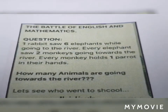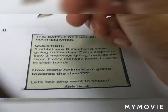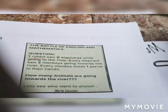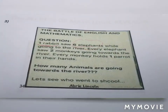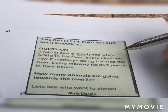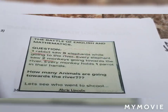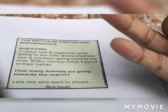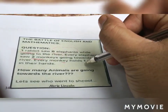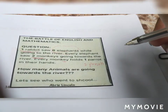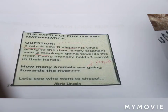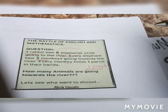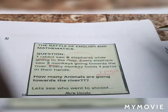As you can see, one rabbit saw the six elephants, so the six elephants did not go to the river — only the one rabbit. Two monkeys are going towards the river. Every monkey holds one parrot, so two monkeys have two parrots total. Counting: six elephants did not go; only one rabbit, two monkeys, and two parrots. So one plus two plus two equals five — therefore five animals are going towards the river.